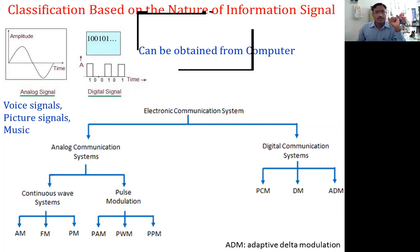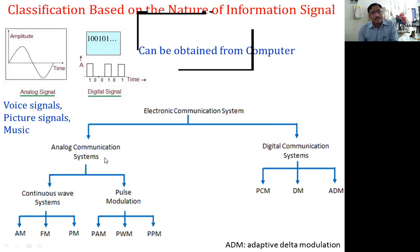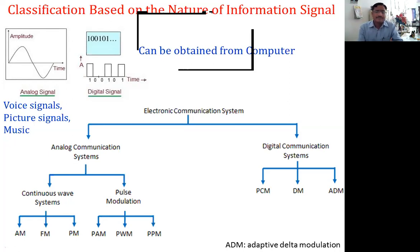When we have a pulse analysis of a wave, it is called pulse modulation. You can have pulse amplitude modulation — PAM — then pulse width modulation — PWM — and the third is pulse position modulation — PPM. If the amplitude of a pulse varies, it is called pulse amplitude modulation, PAM.